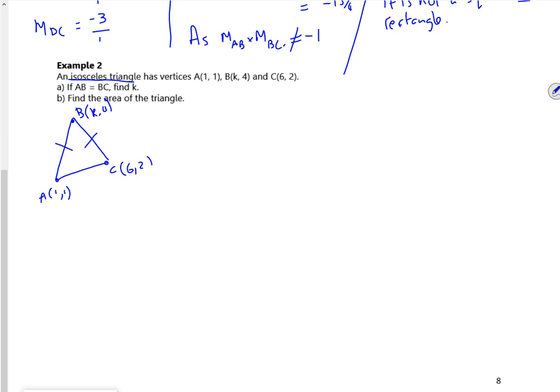Right, then. It tells me that AB and BC are the same. So I'll find out K. So I know that the length, in terms of my plan for part A, the length of AB should be the same as the length of BC. And I should then be able to create an equation which I'm going to solve, which will give me K.